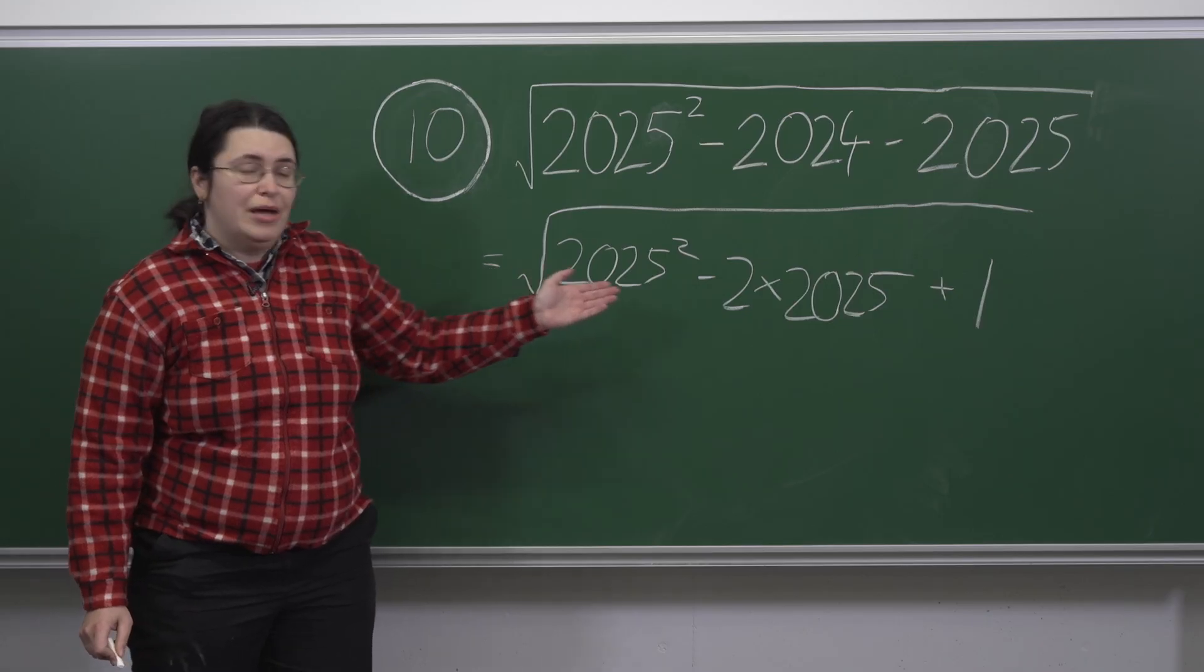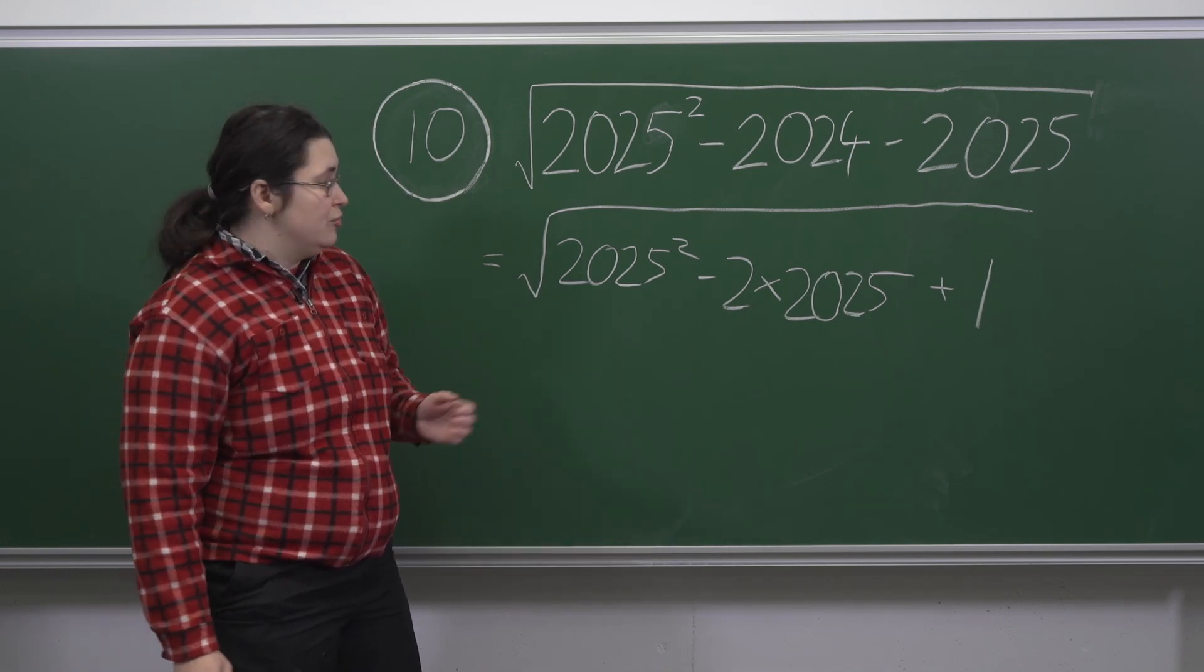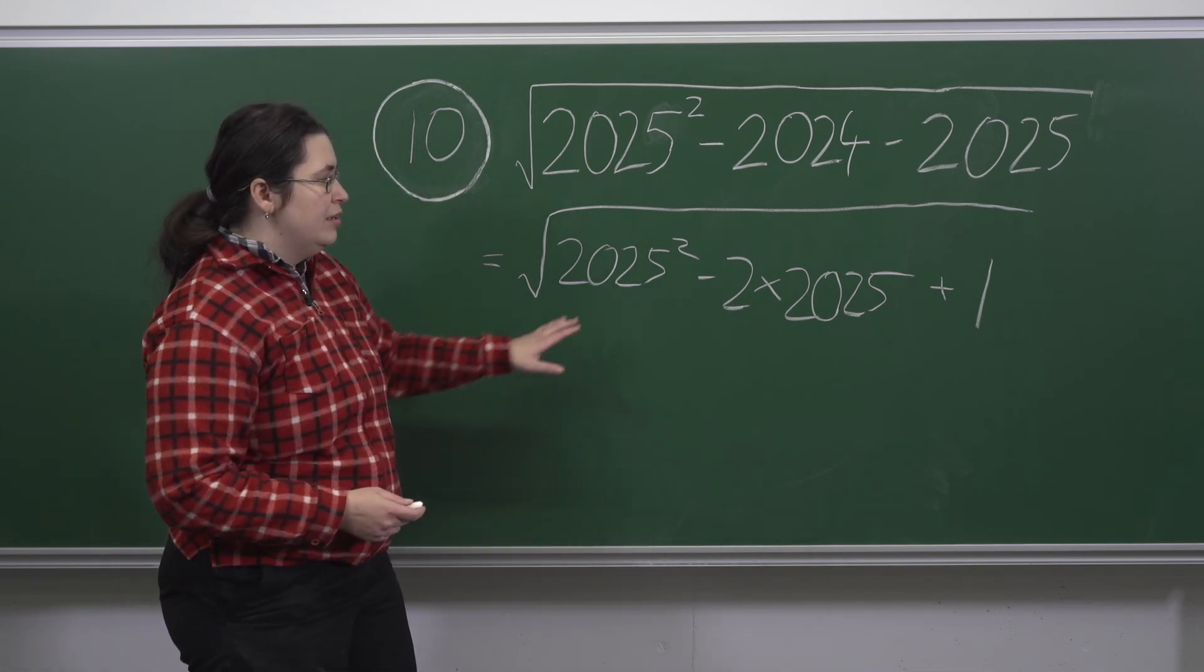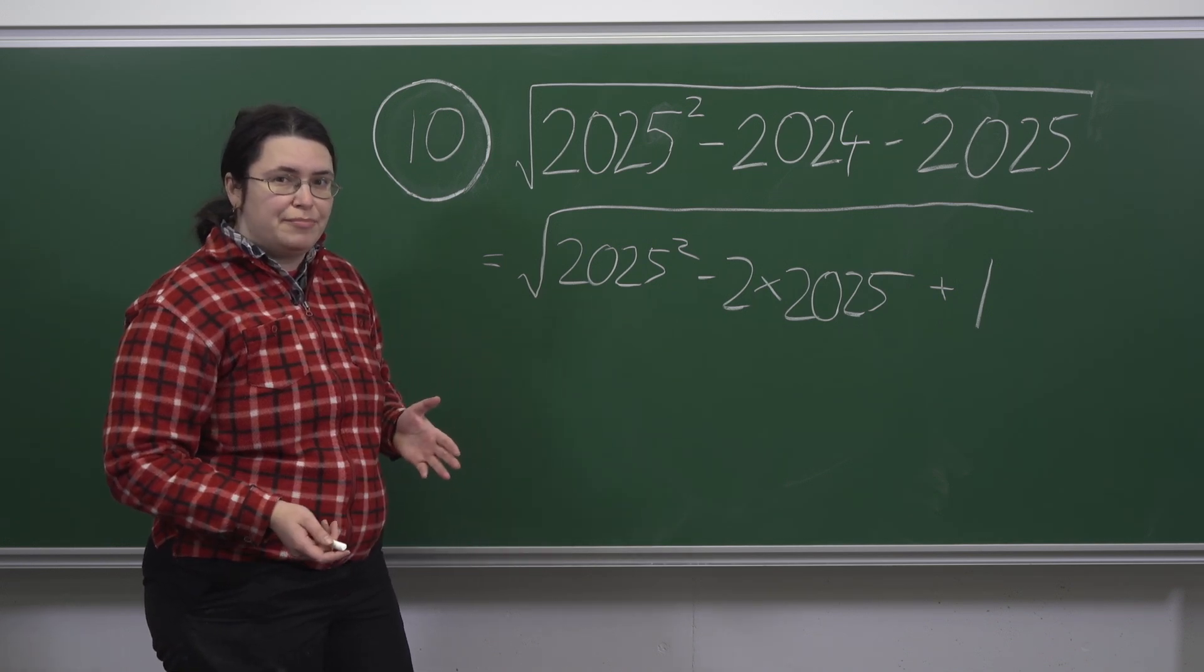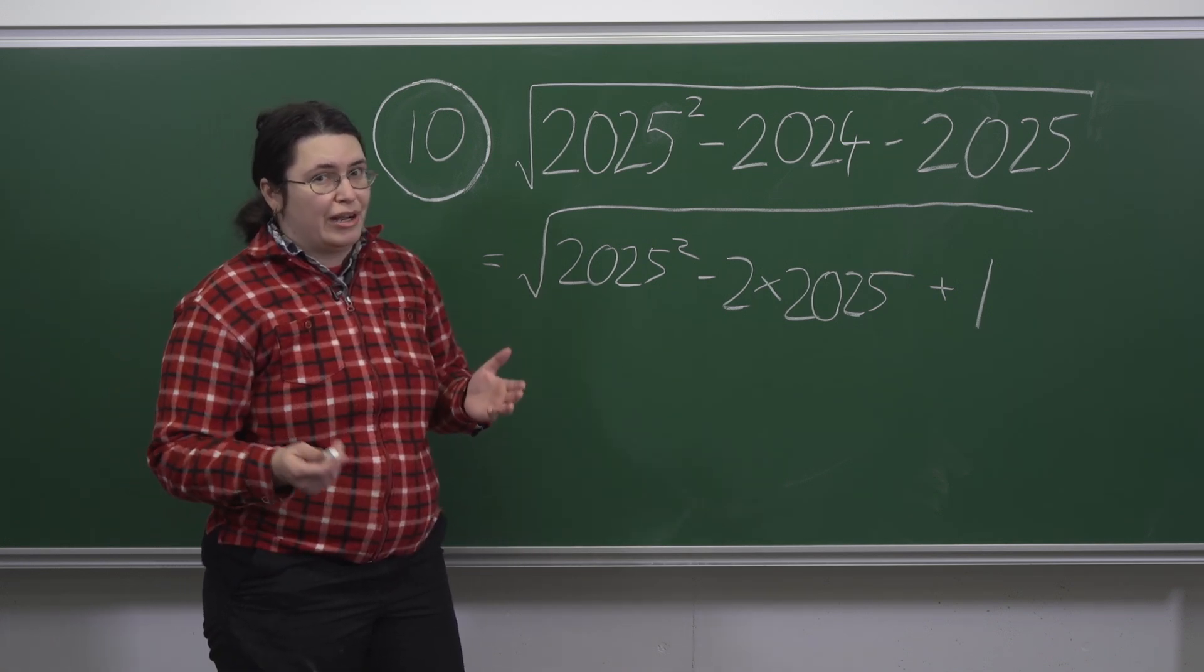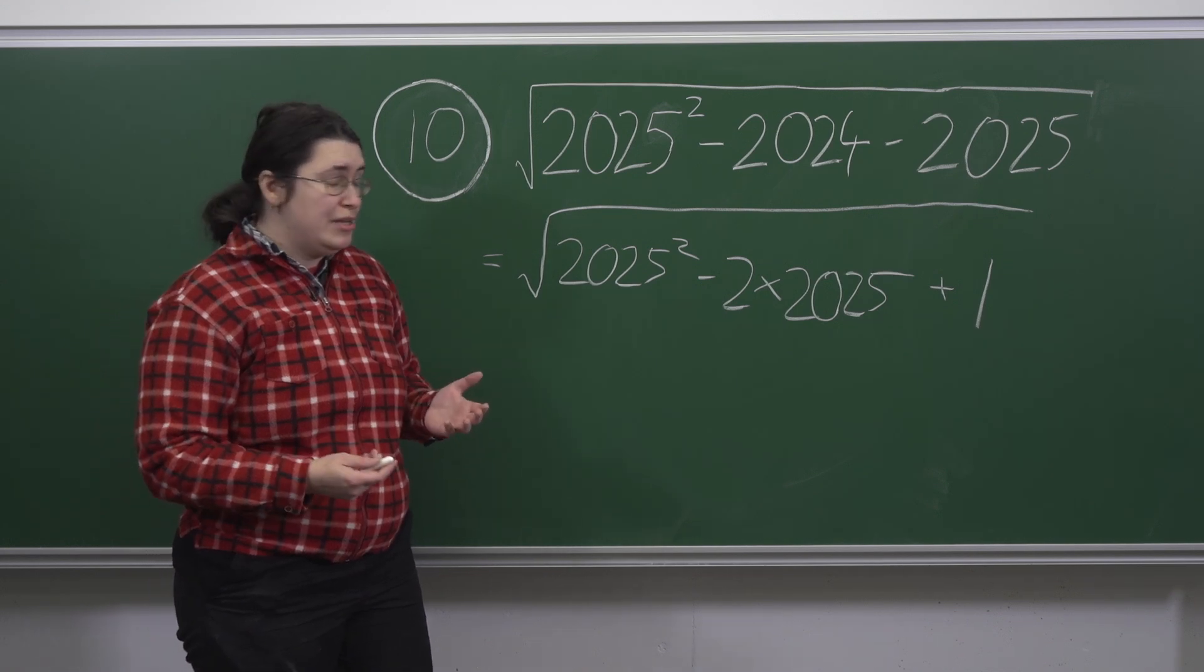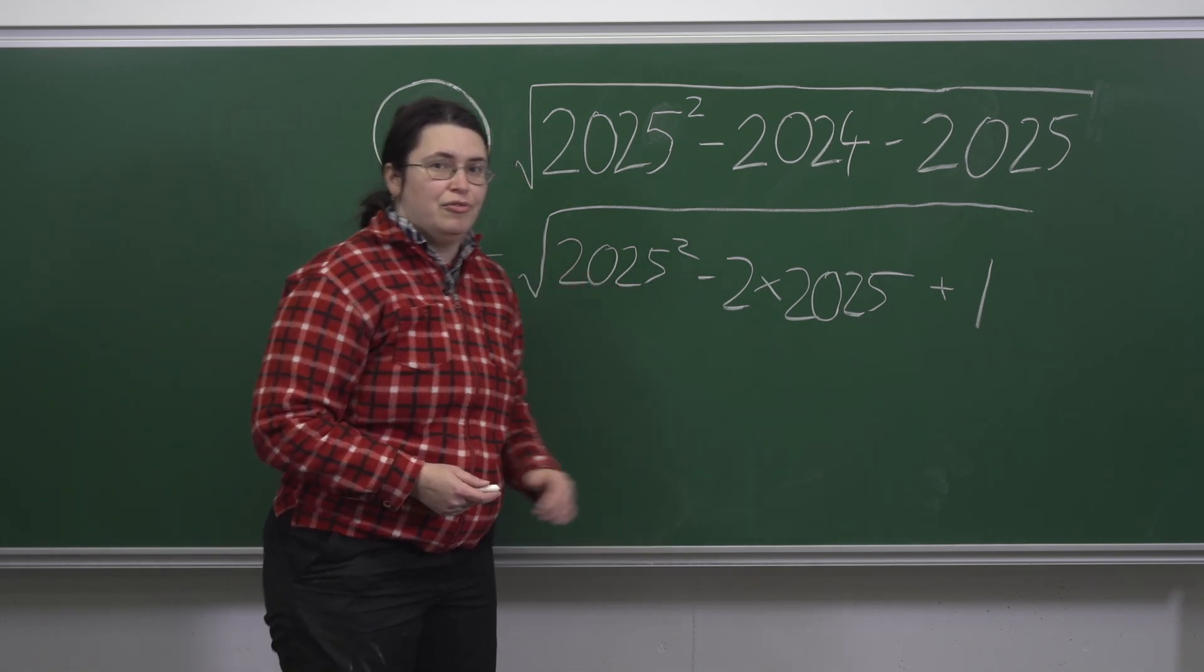Now you may observe that this is actually 2025 minus 1 all squared. Because if you remember your general expression for a minus b in brackets squared, we have a squared minus 2ab plus b squared. And that's exactly the form we take here.